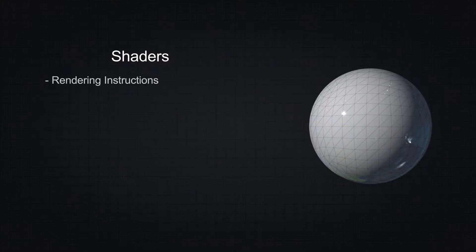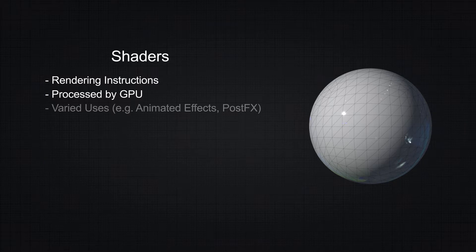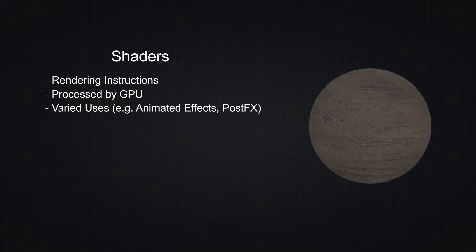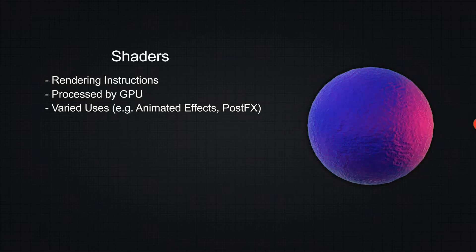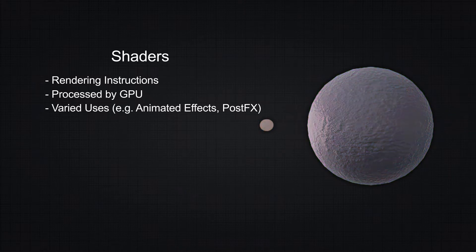A shader is a set of instructions that graphics cards process in real-time, containing information for rendering an object based on a lighting input and material parameters. Their use varies from simple texture use to animated effects, realistic physical approximations such as iridescence, or even post-processing effects such as color grading or bloom effects.